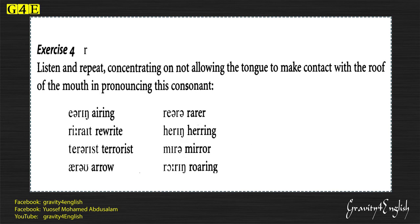Exercise 4: R. Listen and repeat, concentrating on not allowing the tongue to make contact with the roof of the mouth in pronouncing this consonant. Airing. Rewrite. Terrorist. Arrow. Rarer. Herring. Mirror. Roaring.